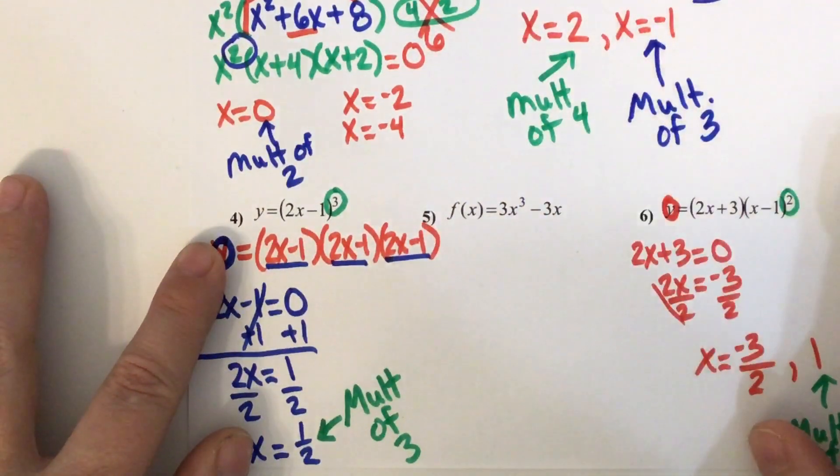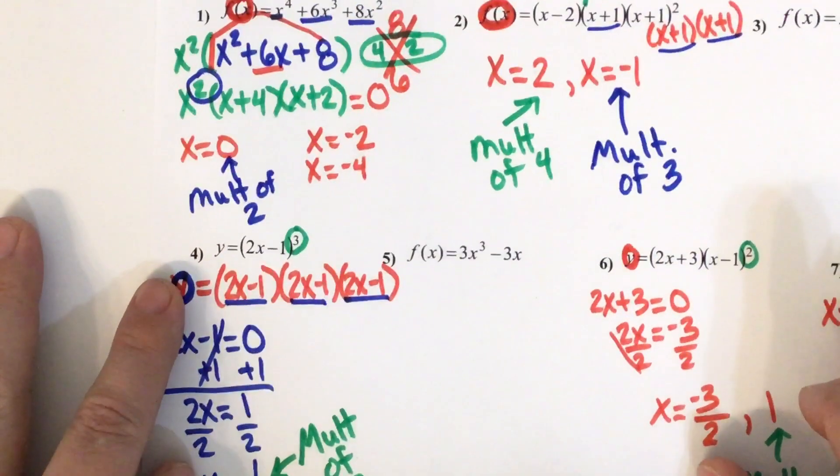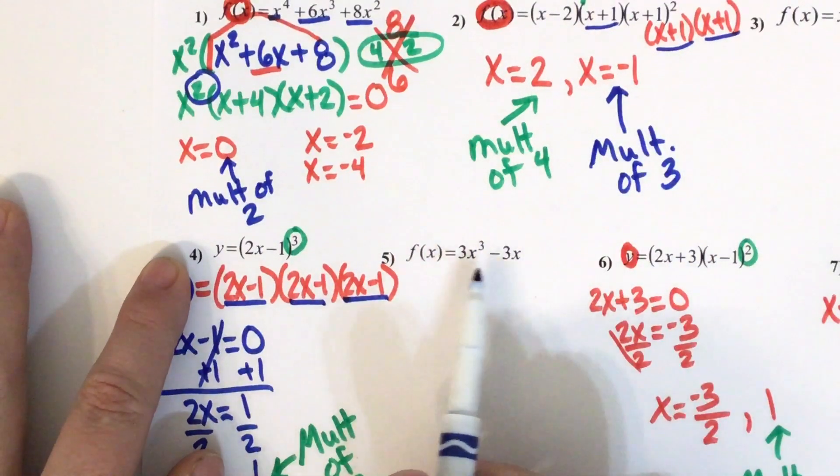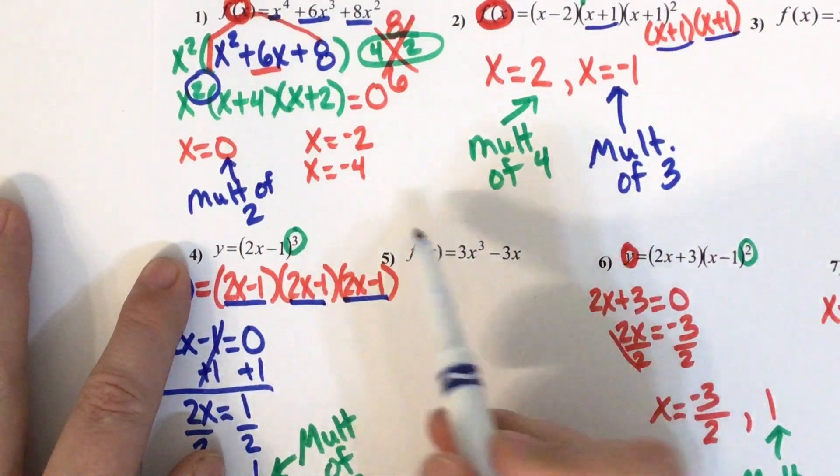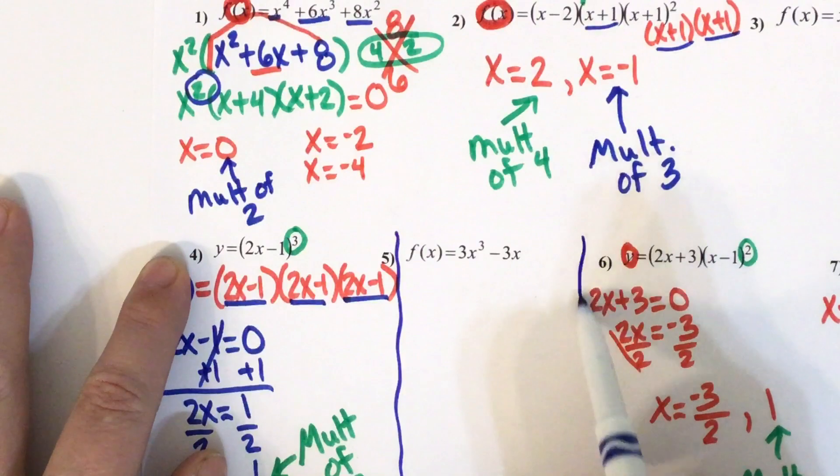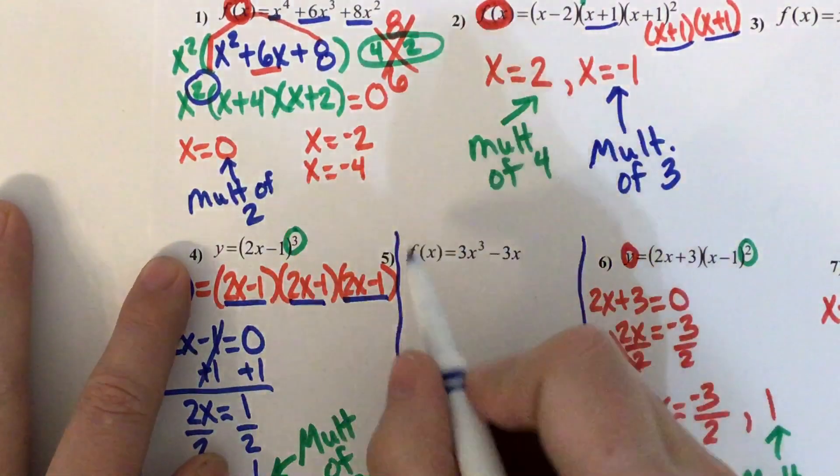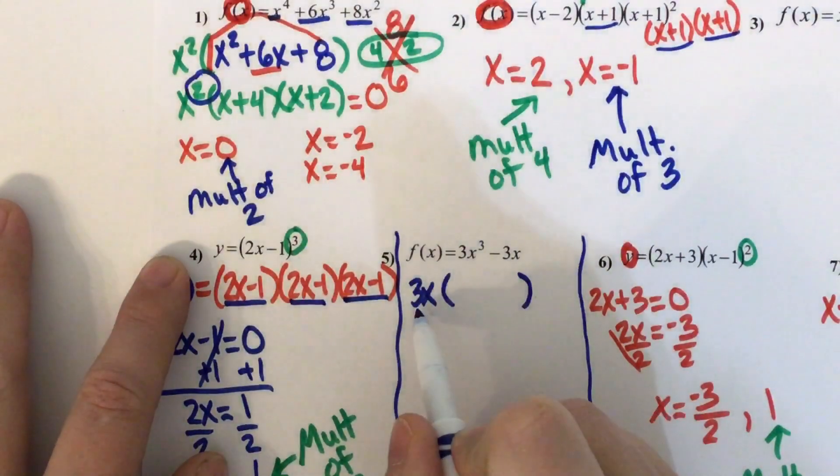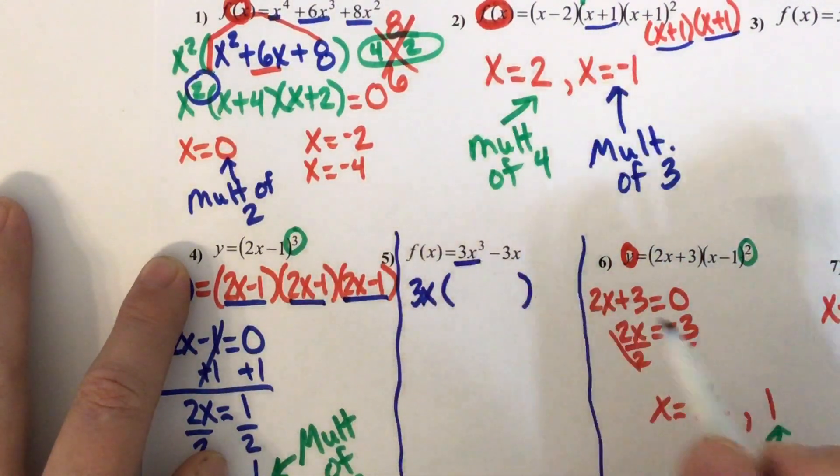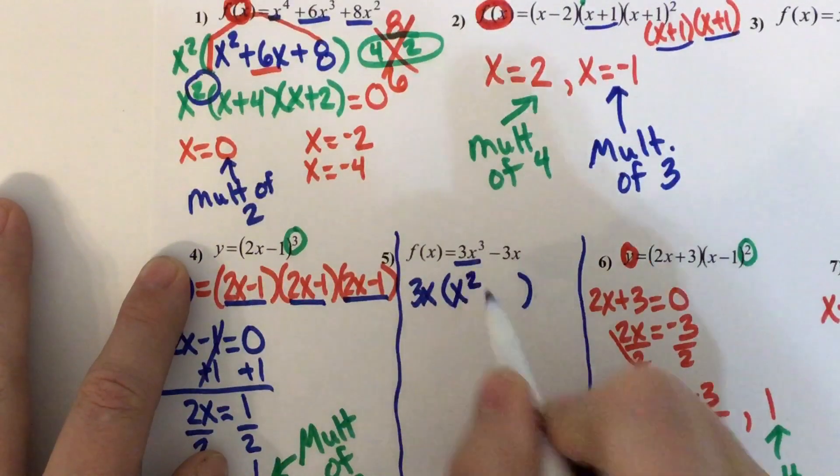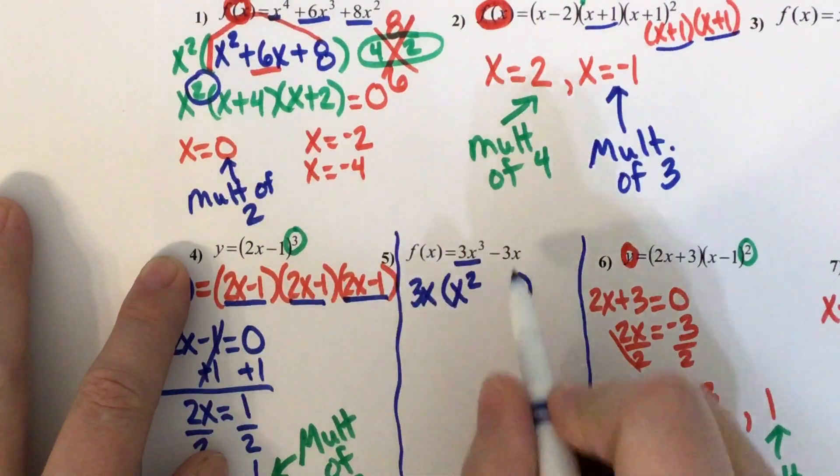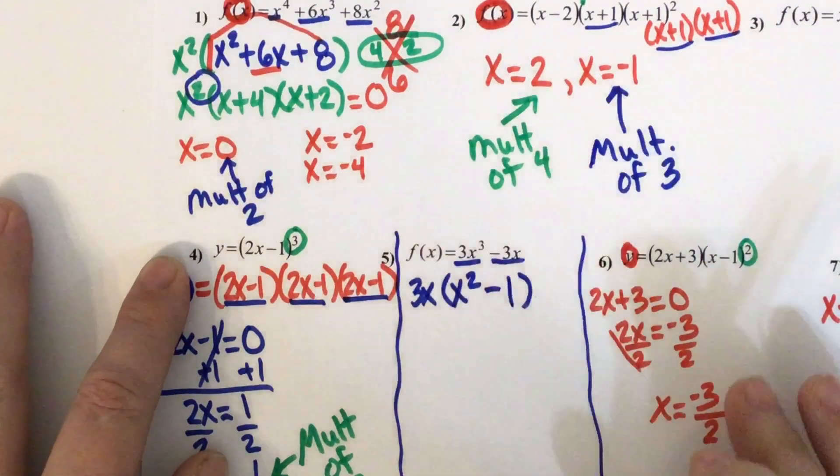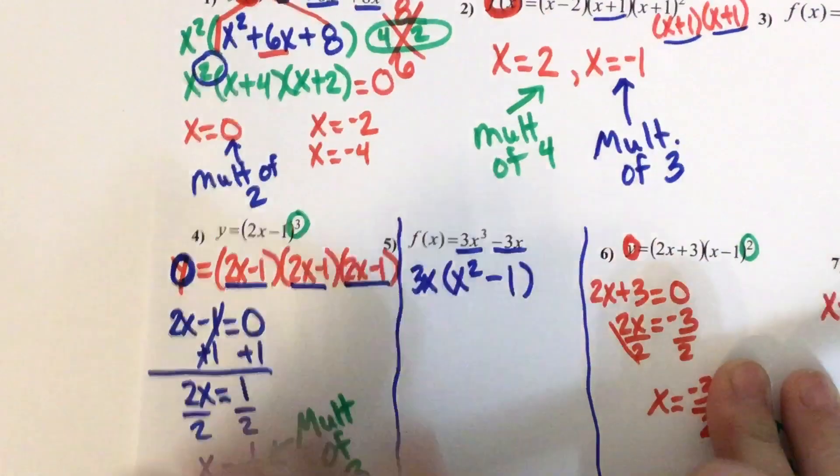Okay, let's look at five. Five is not factored, so let's factor it. First thing, do I have a GCF? I do. What is it? 3x. Build your parentheses. Let's get it back. 3x times what is 3x cubed? x squared. 3x times what is negative 3x? Negative one.